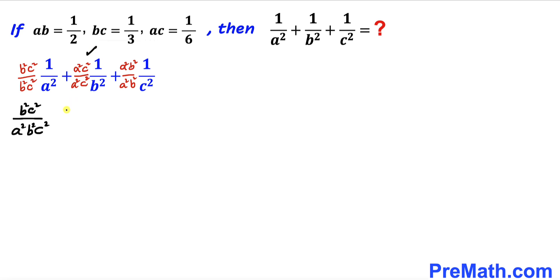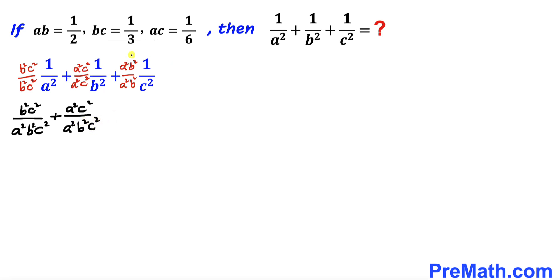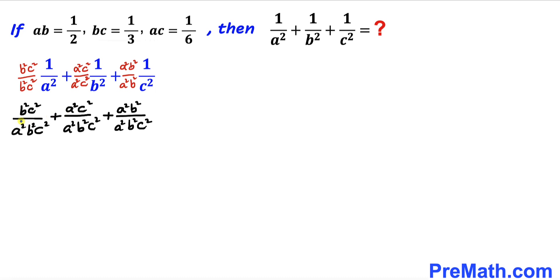For the second term we get a²c² divided by a²b²c², and for the third term we get a²b² divided by a²b²c². We can now see that the denominator a²b²c² appears across all three terms.